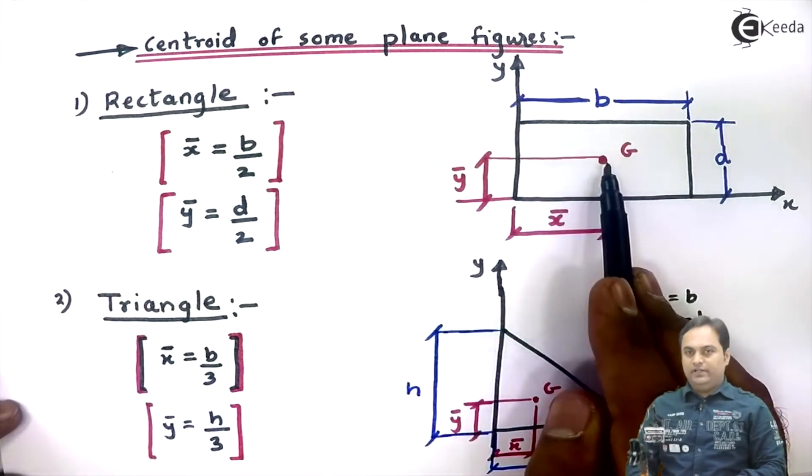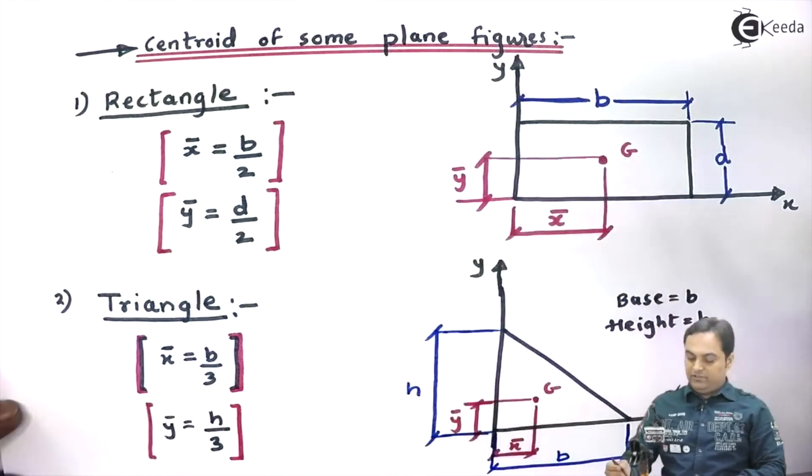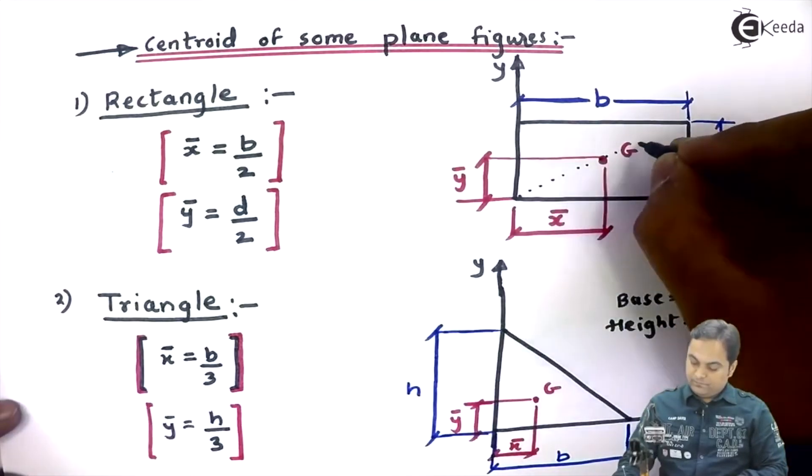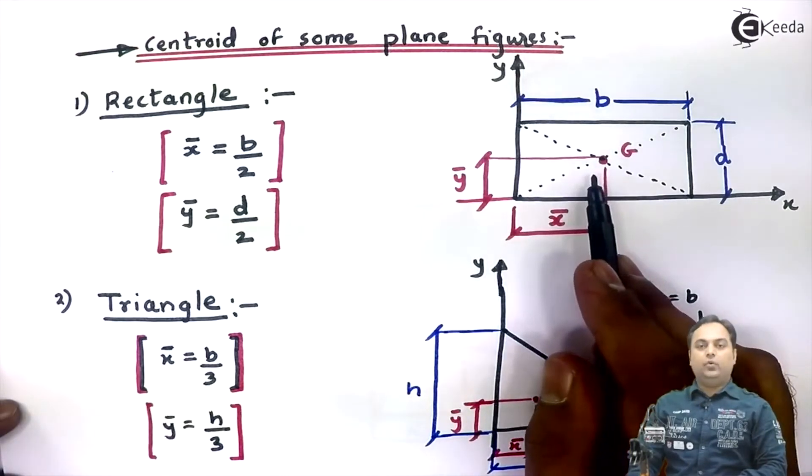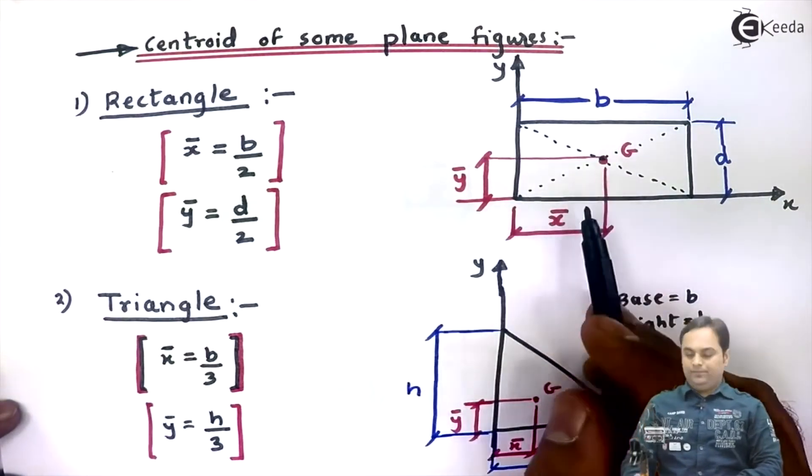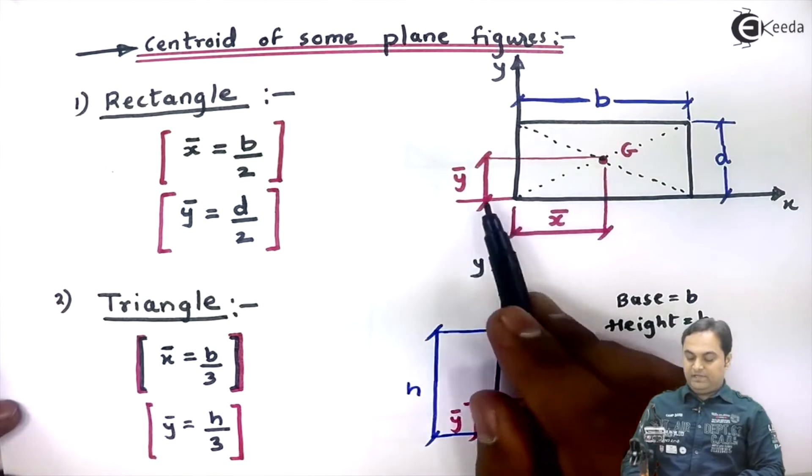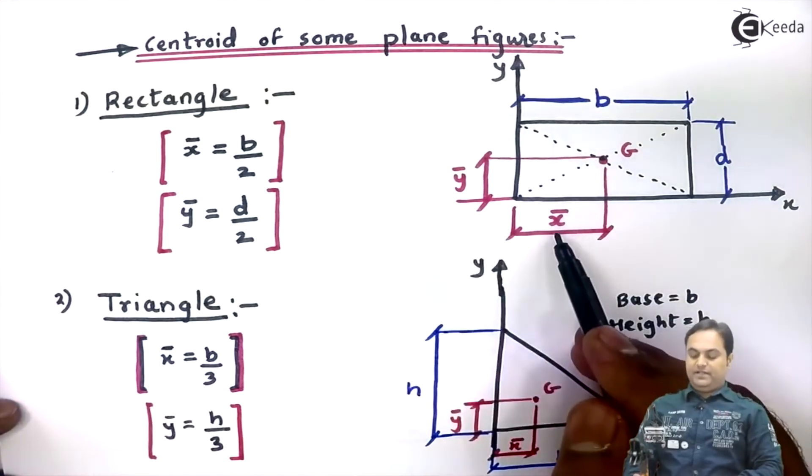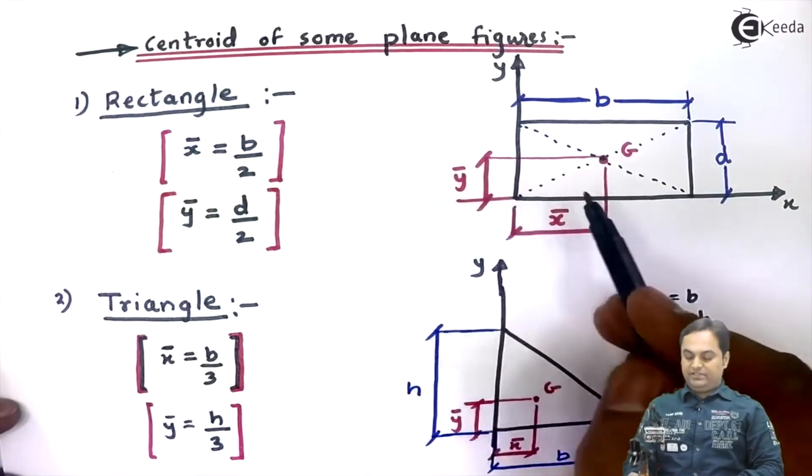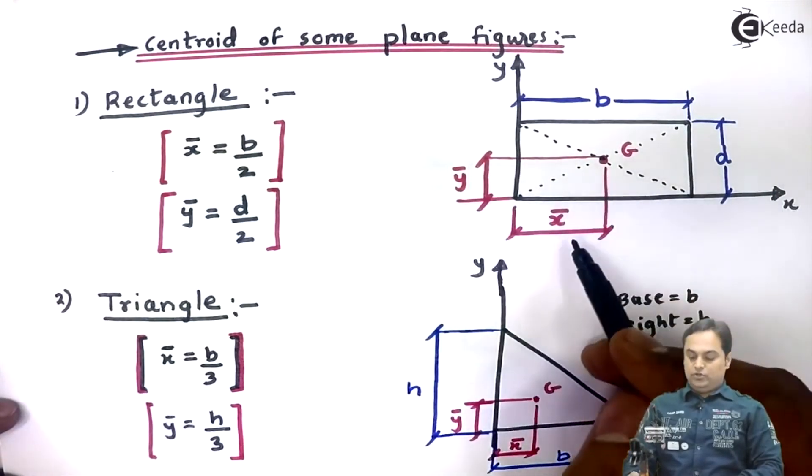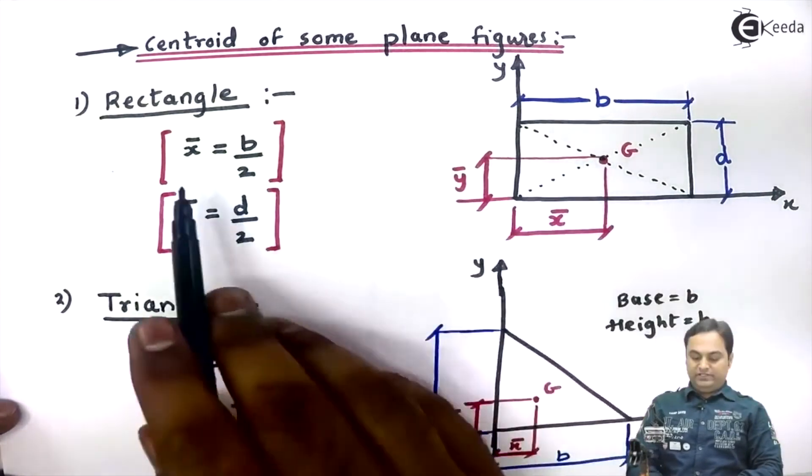If we want to calculate the coordinates for this centroid, coordinates are given by x̄ and ȳ, where x̄ is the distance with respect to y-axis and ȳ is the distance with respect to x-axis. So x̄ for a rectangle, if the width is B, x̄ is half of B.